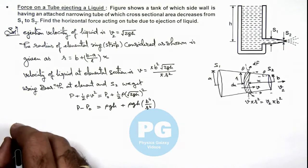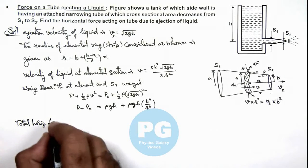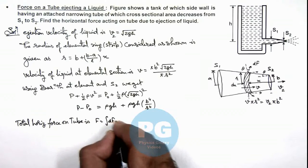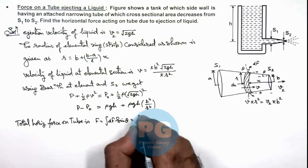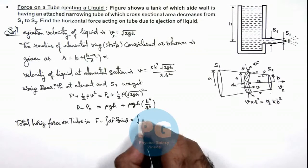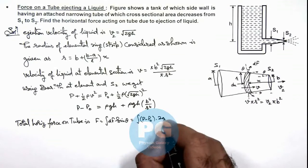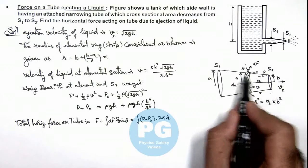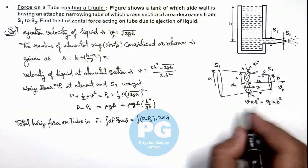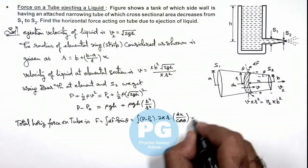So we can calculate the total horizontal force on tube. This force we can write as integration of dF·sin(θ). And if we calculate the value of dF, it'll be pressure difference multiplied by the area of this element. So this is (p - p₀) multiplied by 2π·r·dx/cos(θ), so this will be dx/cos(θ) multiplied by sin(θ).